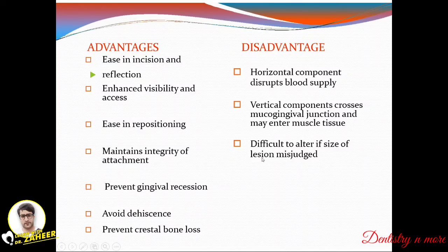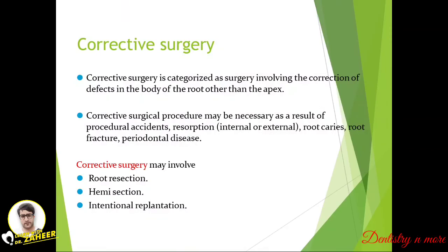Problems with the Luebke-Ochsenbein flap are that the horizontal component disrupts blood supply, vertical components cross the mucogingival junction and may enter muscle tissues, and it is difficult to alter if the size of the lesion is misjudged. Corrective surgery is categorized as surgery involving correction of defects in the body of the root other than the apex.